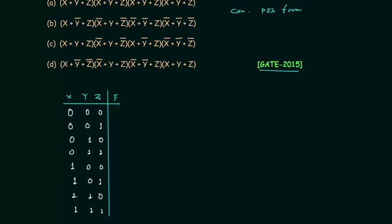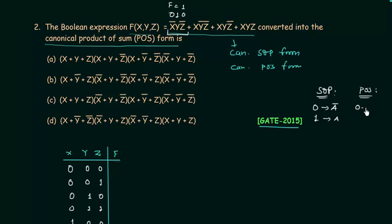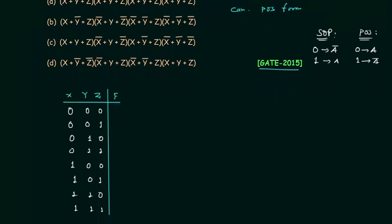These are the eight combinations. The canonical SOP form is obtained directly from the truth table, so we can obtain the truth table from the canonical SOP form. The first minterm is x complement, y, z complement — meaning x is 0, y is 1, z is 0 — so f equals 1 for (0,1,0). In the SOP form, if a variable is 0 we write it complemented; if 1 we write it as is. In the POS form it is the opposite: if a variable is 0 we write it as is; if 1 we write it complemented. So f equals 1 when x=0, y=1, z=0.